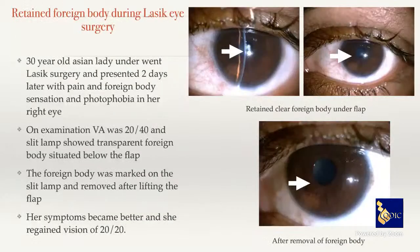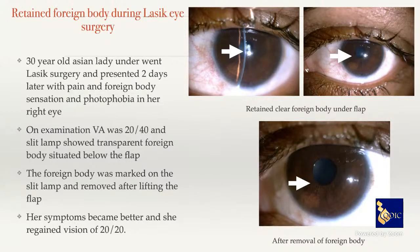Another patient presented after LASIK with vision of 6/9 and a foreign body sensation. On slit lamp examination, a transparent piece of material was found under the flap — a fragment of surgical drape caught in the microkeratome and deposited under the flap. We marked it, lifted the flap, and removed it. The patient became asymptomatic with 6/6 vision. Always drape the eye well when using a microkeratome.